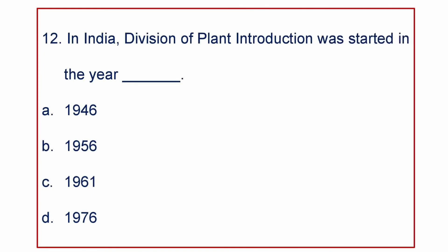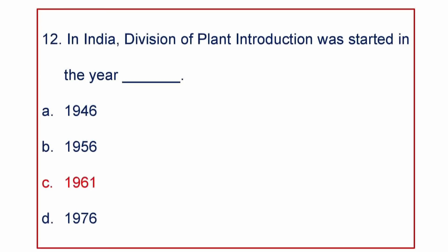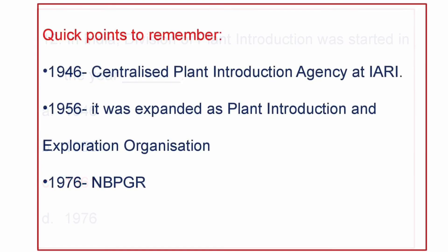Next question: in India, the Division of Plant Introduction was started in the year — A) 1946, B) 1956, C) 1961, or D) 1976. The answer is 1961. In 1946, the Centralised Plant Introduction Agency at IARA was started; in 1956, it was expanded as the Plant Introduction and Exploration Organisation; and in 1976, NBPGR was set up.